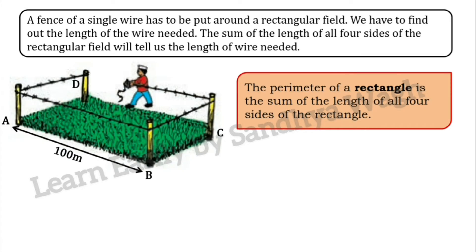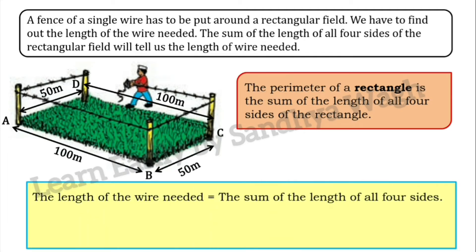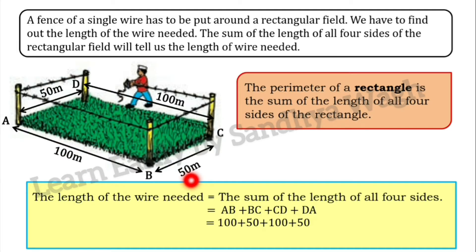Side AB is 100 metres, BC is 50 metres, CD is 100 metres, and DA is 50 metres. So the length of the wire needed equals AB plus BC plus CD plus DA. So 100 m plus 50 m plus 100 m plus 50 m is equal to 300 m. The perimeter of the field is 300 metres, so 300 m of wire is needed.